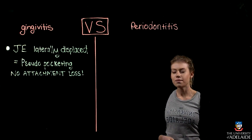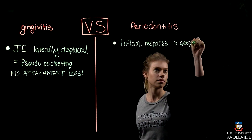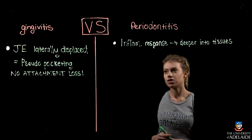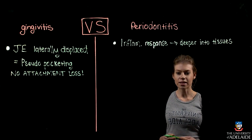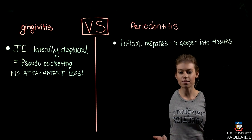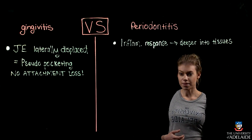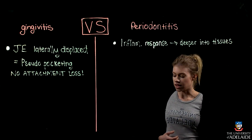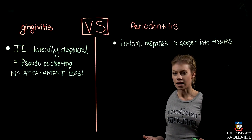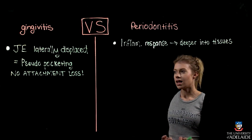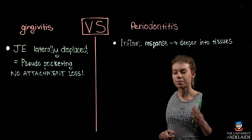In periodontitis, the inflammatory response moves deeper into the tissues. Due to bone resorption, there is also connective tissue attachment loss, meaning a breakdown of fibres such as transeptal fibres, which reform at a more apical level. This equals a migration of the junctional epithelium to follow the alveolar crest, maintaining the biological width. Clinically, this is seen as pocket formation. In gingivitis we don't get the breakdown of connective tissue or attachment loss, but in periodontitis we do.